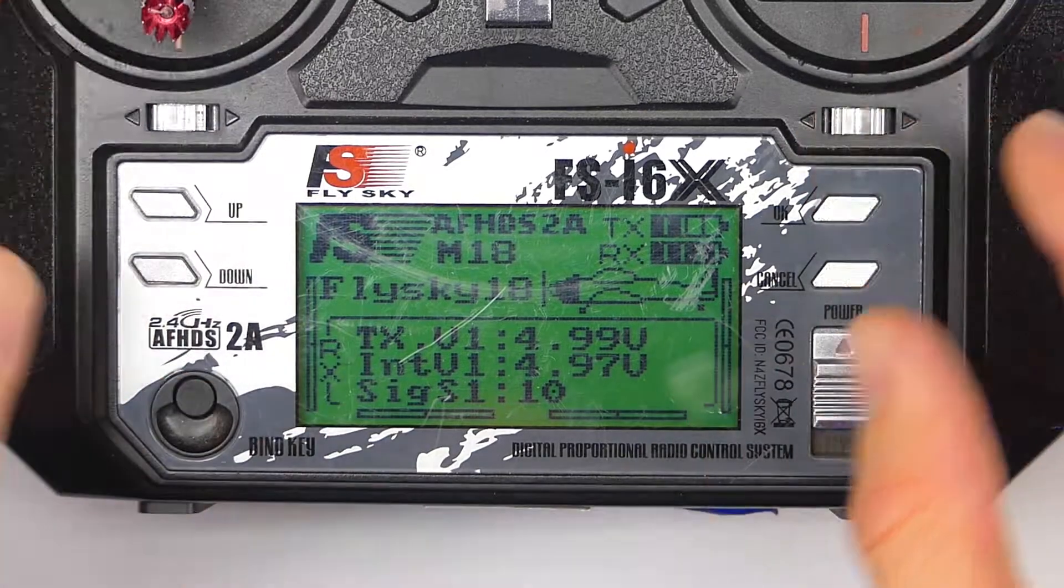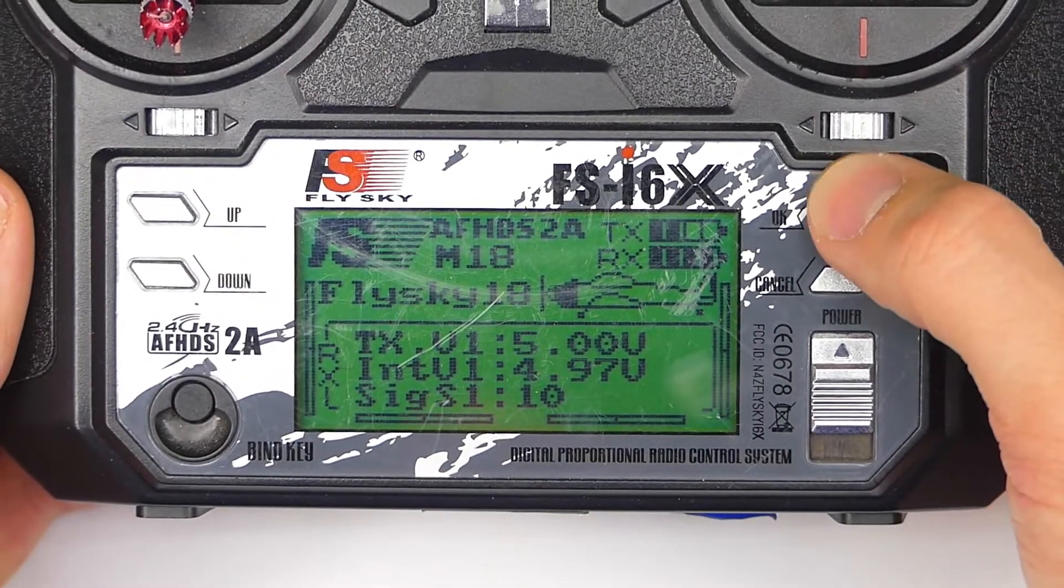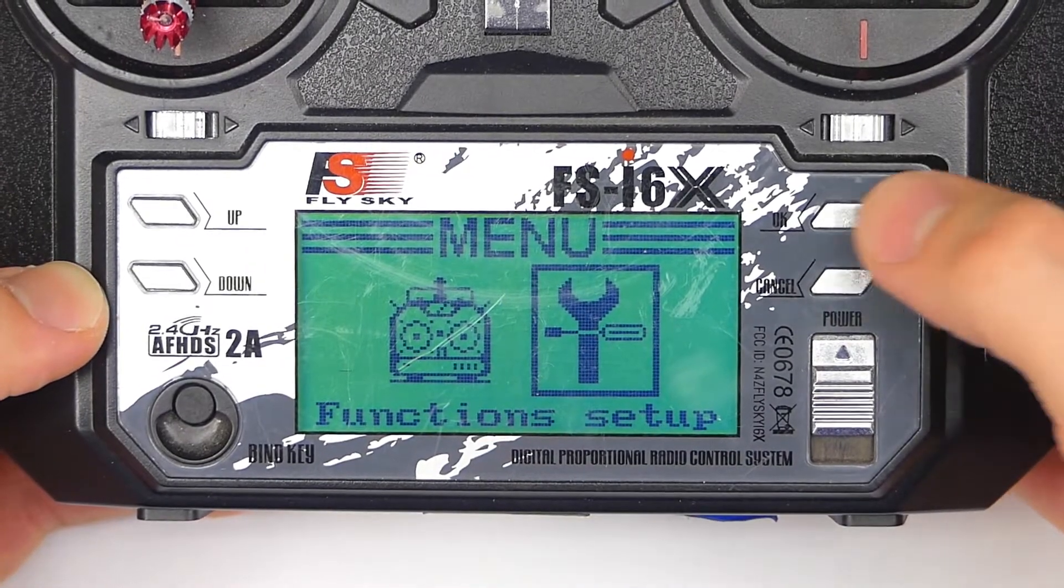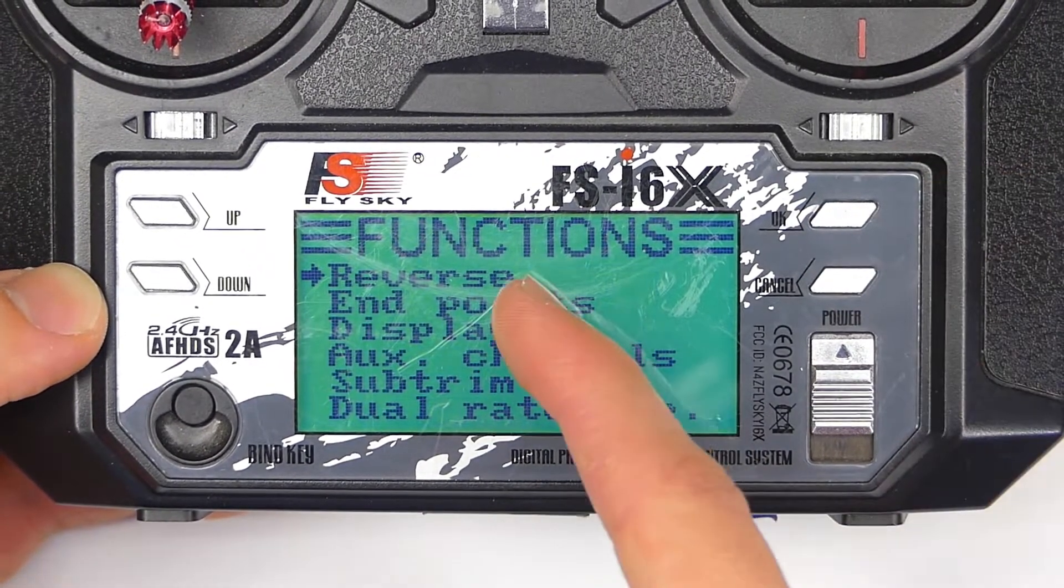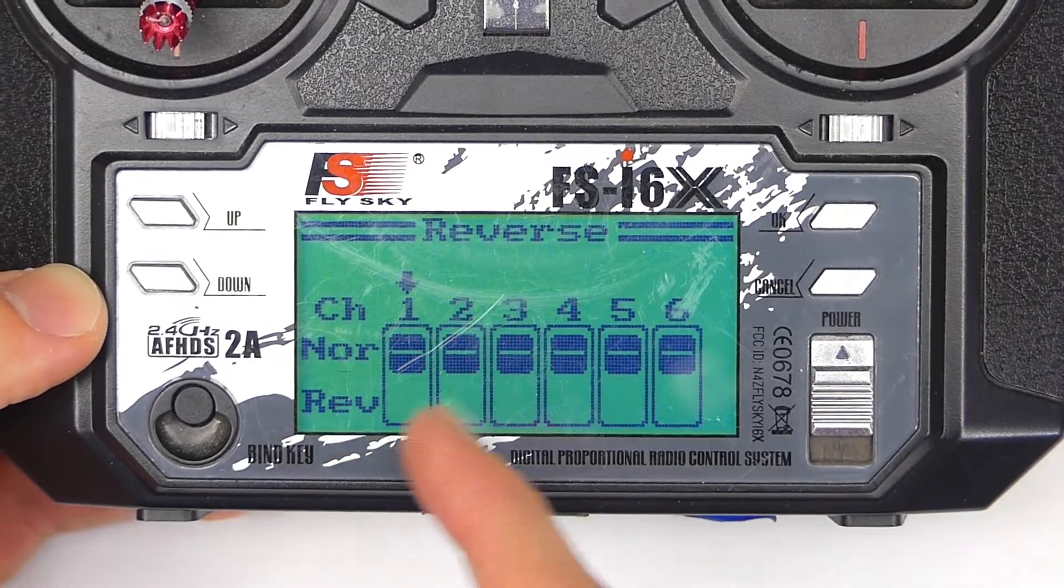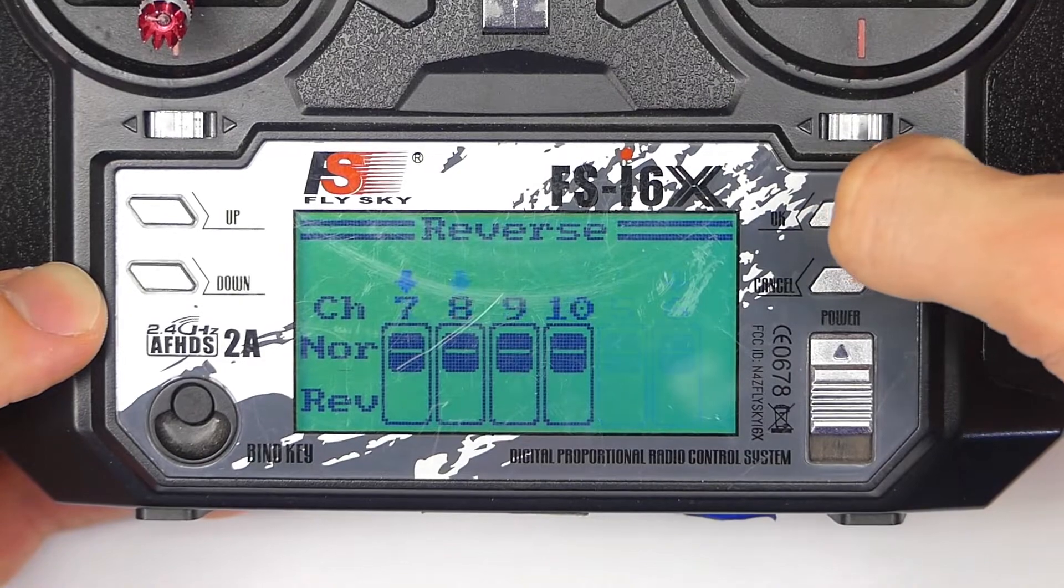So here we are in the transmitter, just the main screen. We're going to press and hold OK to go into the menu, and then we're going to go to function setup, and then the very first option is reverse. We want to select that, and then here we have all of our channels, and we can scroll through the channels by pressing OK.